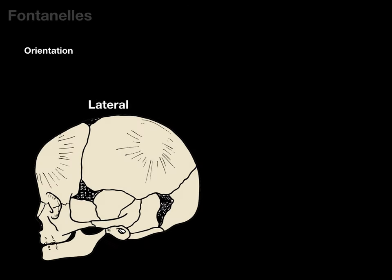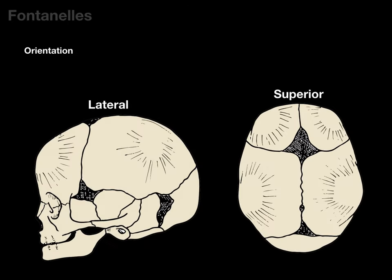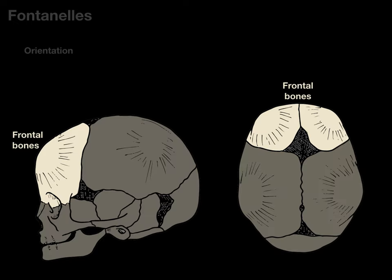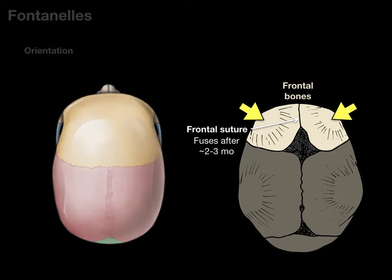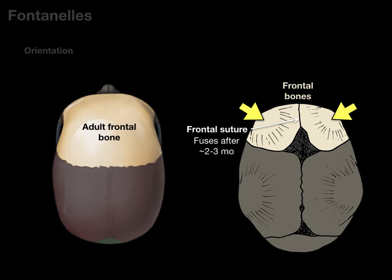To begin, let's do a little orientation. Here's a lateral picture of a fetal skull and here's a superior illustration of a fetal skull. There are the frontal bones, which form the front of the fetal skull or forehead. In a fetus, these two frontal bones are divided by a frontal suture right through the midline. This frontal suture fuses after two or three months after birth, which is why in an adult you only see one adult frontal bone.